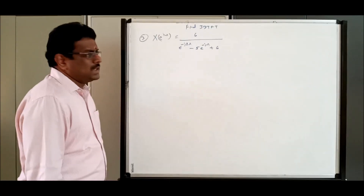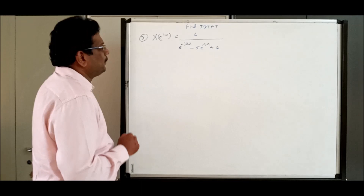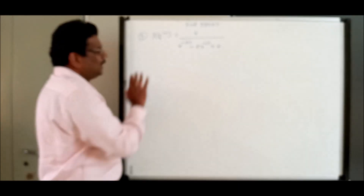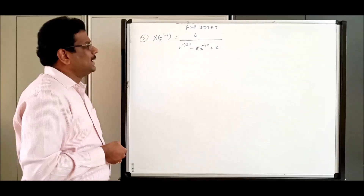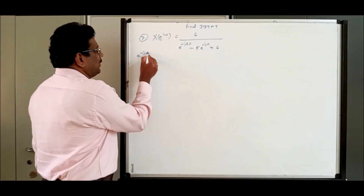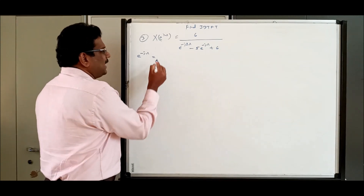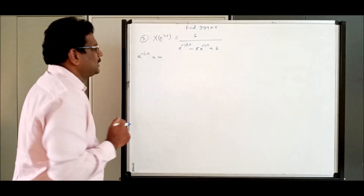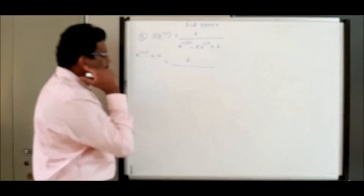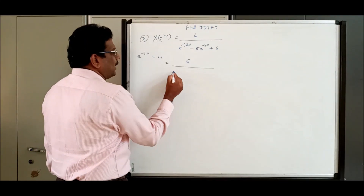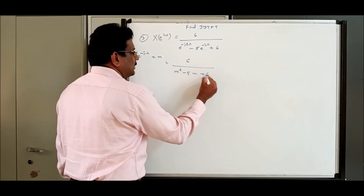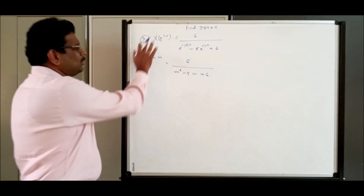Now find the IDTFT of a problem where the denominator has a quadratic form — second order. We cannot do the IDTFT directly. One simple suggestion: just replace e^(-jω) by a simple variable, let us say m. If we do that, the given expression becomes 6 divided by (m² minus 5m plus something), which simplifies the analysis. No need to think about the left-hand side — just work on the right-hand side.